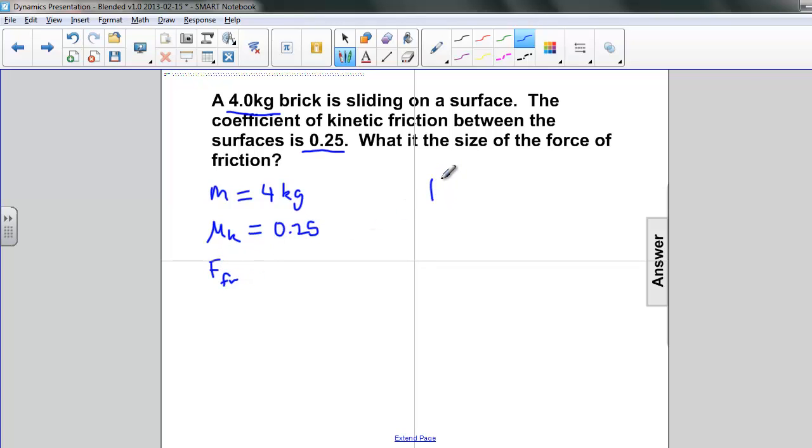Recall that our definition for the force of friction is equal to the coefficient of kinetic friction times the normal force. We also know that the normal force on a horizontal surface is equal to the mass of the object times the acceleration due to gravity. It's just equal to its weight.